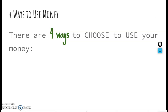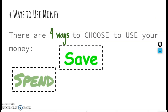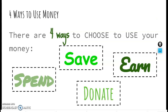There are four ways to choose to use your money. Some of them you may be familiar with, some of them you may not. The first one is spend — I'm sure we all like to spend money. Here's another way: save. You may have heard of this one too. Then there's earn — you can choose to earn money. And last, donate — you can choose to donate money. So these are the four ways: spend, save, earn, and donate, and it's all up to you.